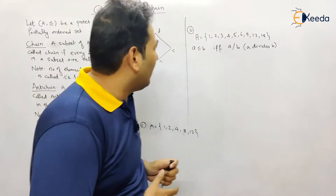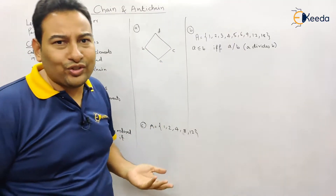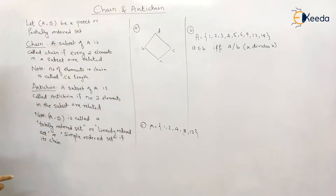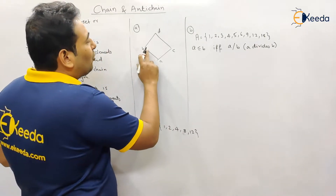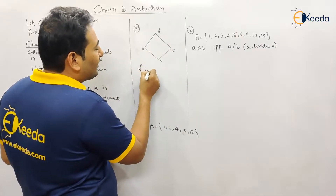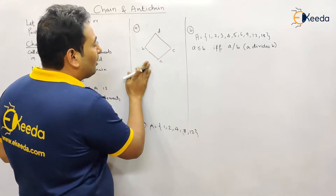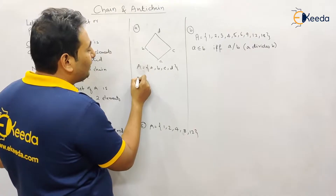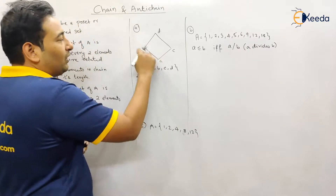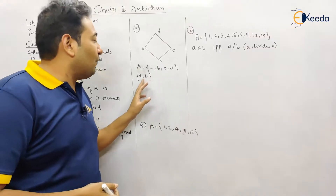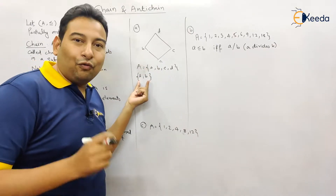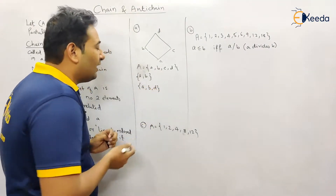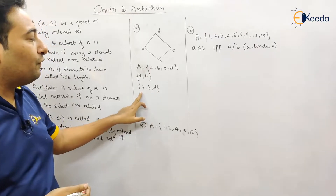Let us now discuss chain and antichain using a Hasse diagram. We have a general set with four elements: a, b, c, d. Let me consider one subset — say {a, b}. This is a subset of the set. Now, a and b are related, therefore {a, b} is a chain.